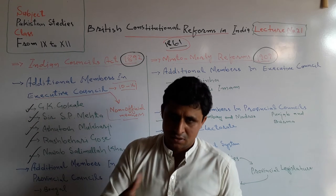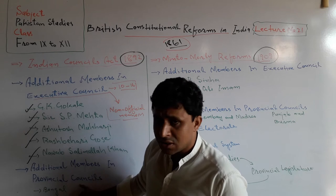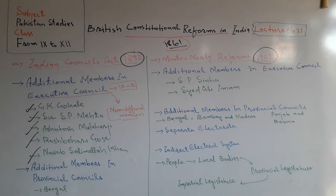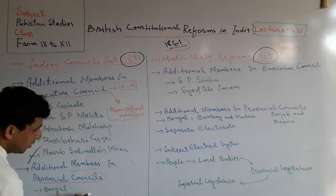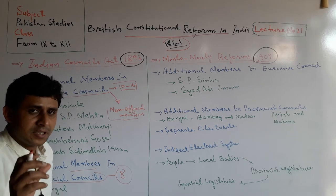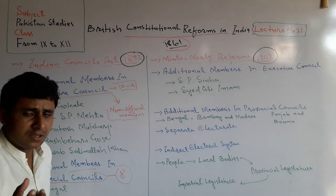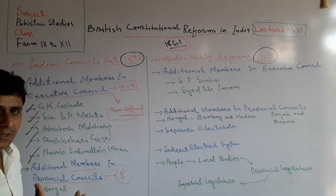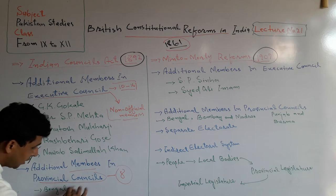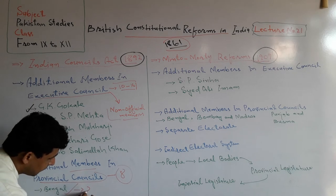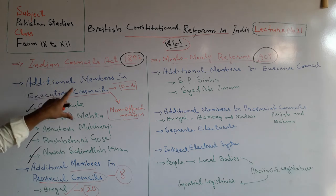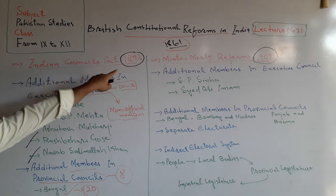In the executive council, Indian members were under the Governor General. In provincial councils, they were under the governors. In the 1892 reforms, additional members at the provincial level had their numbers fixed at eight — eight additional members for a province under the executive council of the governor. But in Bengal, their number was 20.